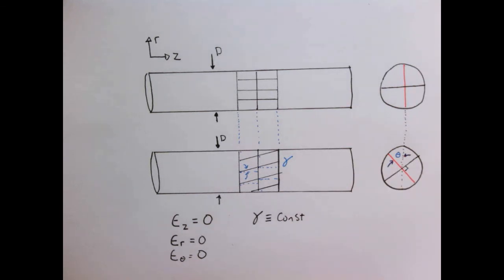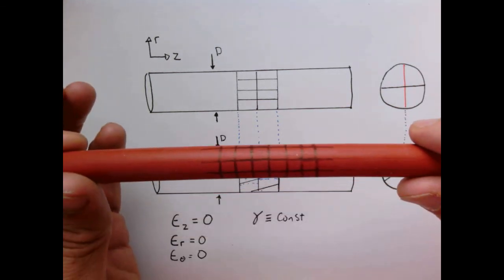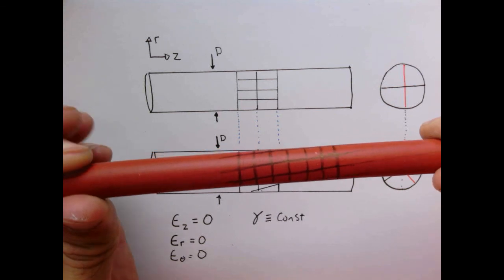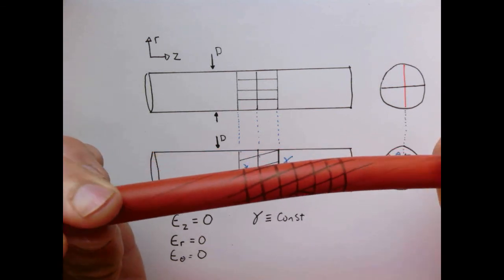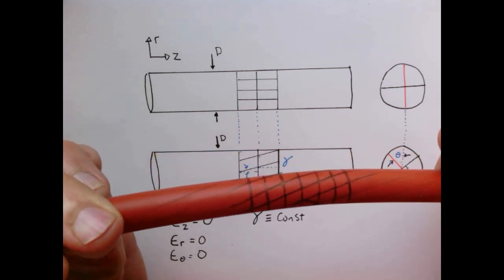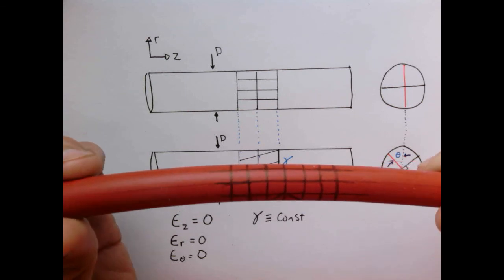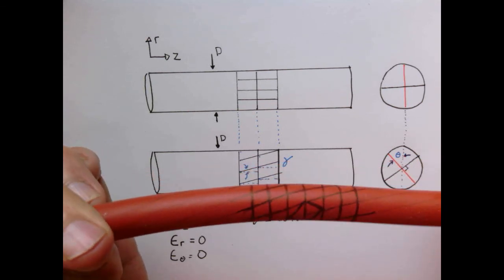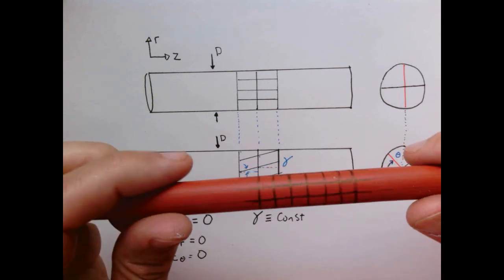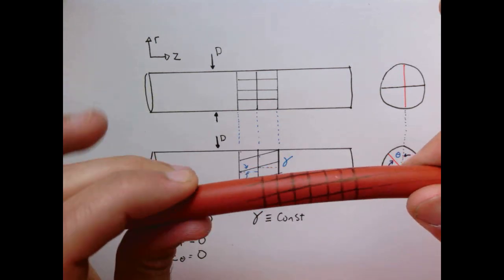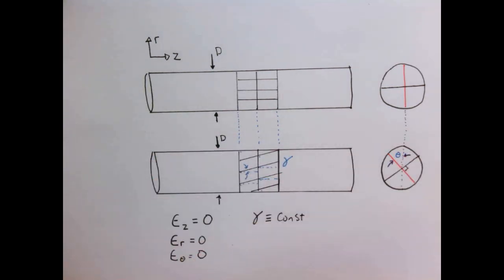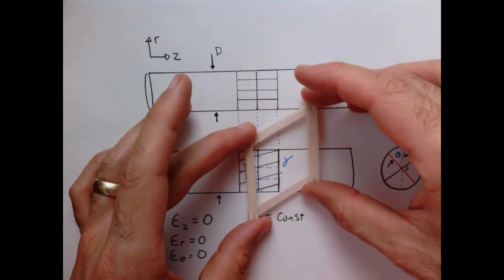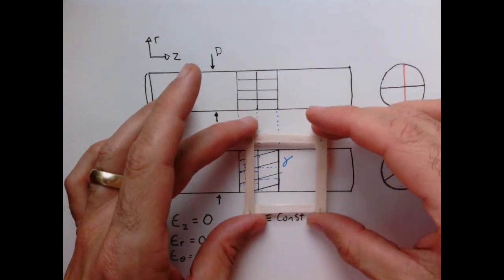If I take the bar and twist it a little, the shear angle changes only a little; twist it a lot, it gets greater and greater. So the shear angle depends upon how much I twist it. The only thing happening is that the elements on the surface are undergoing shear — exactly what we used in our earlier model. The elements are sliding as such.